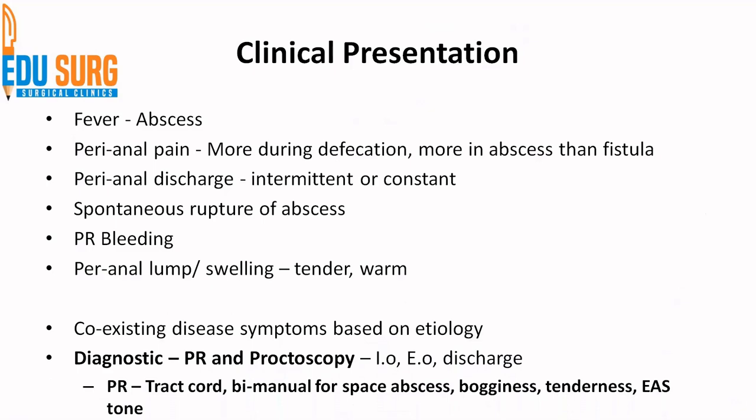Clinical diagnosis is the key in cases with fistula. You do a per rectal exam and proctoscopy. You need to identify the external opening, and based on its location you can suspect the internal opening, which we will see in the next slide. Look for the internal opening, external opening, and the type of discharge. When doing a per rectal exam, also do a bimanual exam along the tract — you can feel a cord-like structure from the external opening to the internal opening, which is the tract of the fistula.